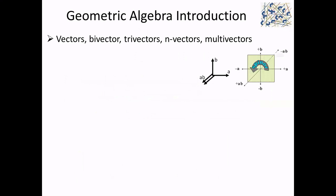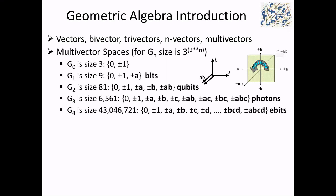Geometric algebra works with vectors — little lines that can be plus or minus one. There's also a bivector, which is two vectors combined via the outer product, raising the grade to a two-dimensional object. Then there are trivectors — three-dimensional objects — and you can have an arbitrary number of dimensions. Lists of these are called multi-vectors. This is all standard geometric algebra material from Hestenes and Doran.